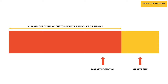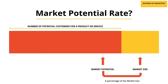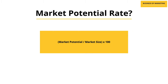A part of that market size — which is the total number of current customers as well as potential customers for a particular product or service — is what is referred to as market potential. Market potential includes not just people who are already consuming a product or service, but even those who could potentially consume it. In our example, the number of potential customers for infant milk is 400,000. Now that we know the market size and the market potential, we can calculate the market potential rate. The market potential rate is a percentage of market size: market potential divided by market size multiplied by 100, which gives 8%. So 8% of the Singapore market are potential customers for infant milk in a given period of time.